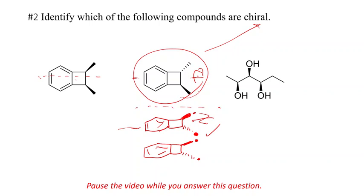And how about this one over here on the right? Do we have a plane of symmetry? Well, it almost looks like there could be a plane of symmetry here. But look at this. There's an ethyl group and a methyl group. So, those are not reflections of each other. So, this one is chiral. Two chiral, one not chiral.